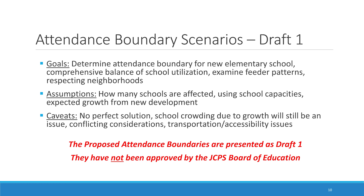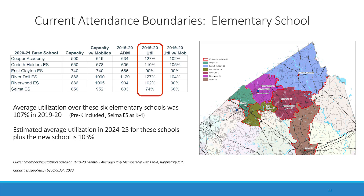As a reminder, the proposed attendance boundaries presented here are drafts. The current boundaries for six elementary schools are shown here. We will use utilization as our metric in comparing these scenarios. Utilization is a measure of how crowded the school is — it equals the number of students divided by the capacity of the school.